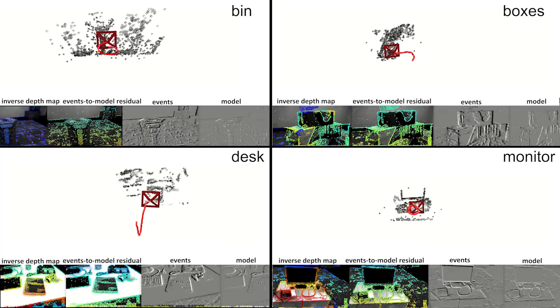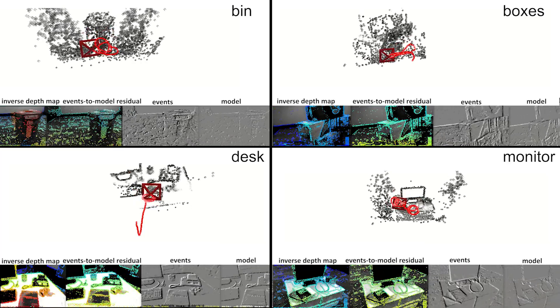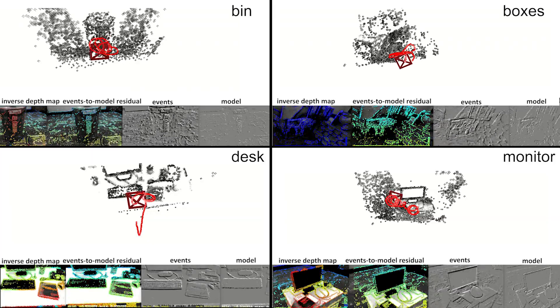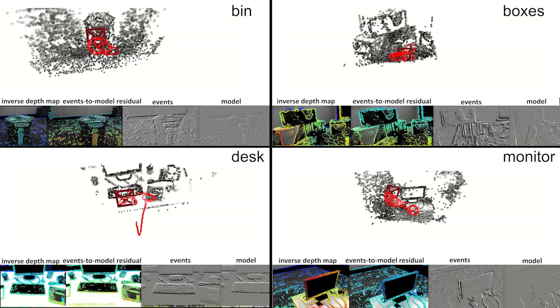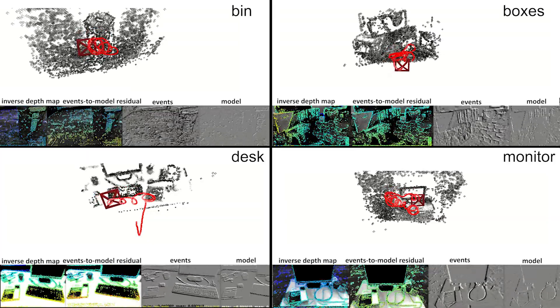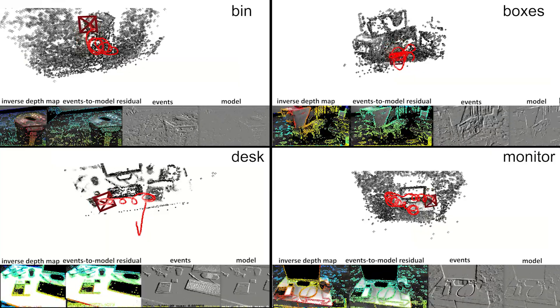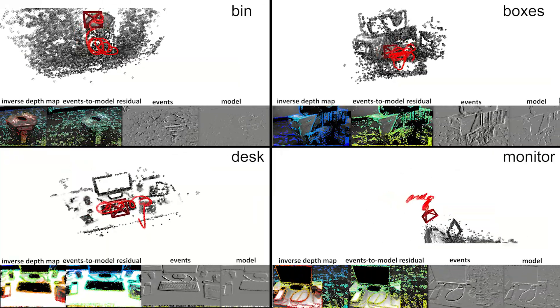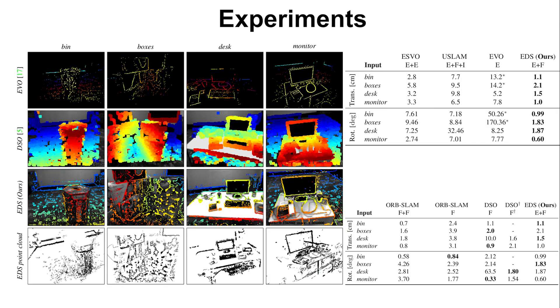We evaluate the method's performance in sequences from the standard RPG Davis Stereo dataset. Data were collected with a handheld stereo camera in an indoor environment with ground truth poses from a motion capture system. We use the left camera since our method is monocular.